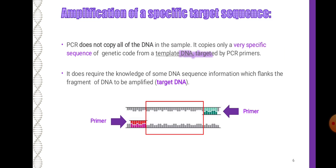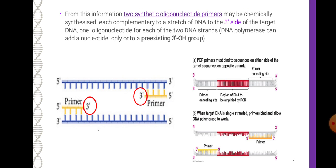PCR does not copy all of the DNA in the sample; it copies only a very specific sequence of genetic code from a template DNA targeted by PCR primers. It does require knowledge of some DNA sequence information flanking the fragment of DNA to be amplified. From this information, two synthetic oligonucleotide primers may be chemically synthesized, each complementary to a stretch of DNA on the three-prime side of the target DNA, one oligonucleotide for each of the two DNA strands.